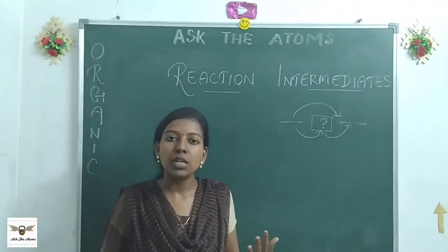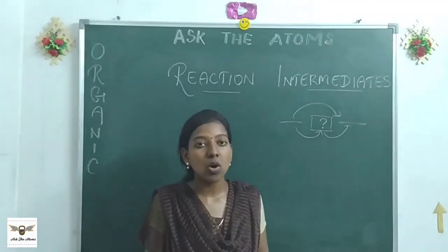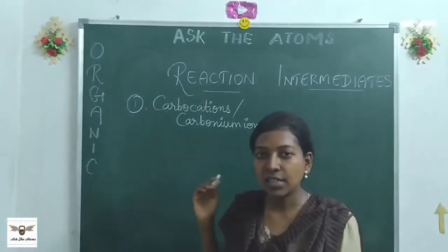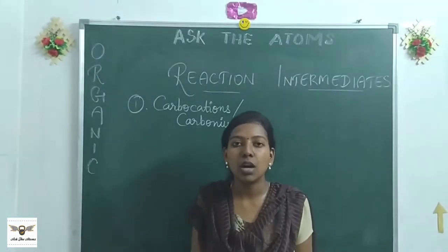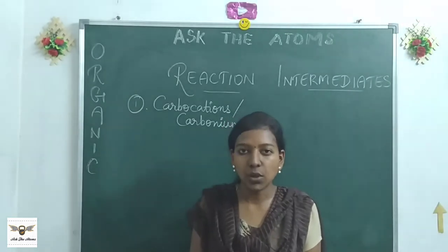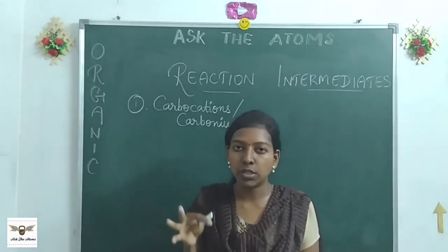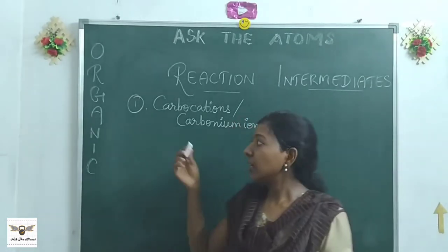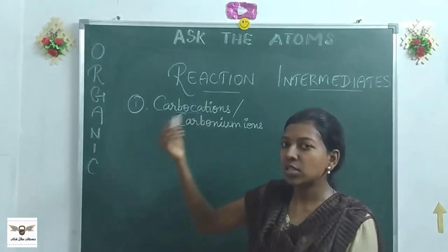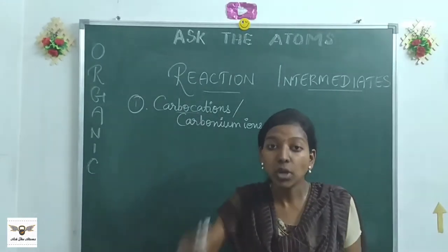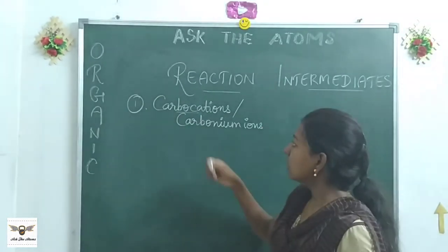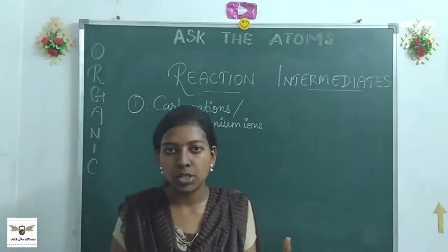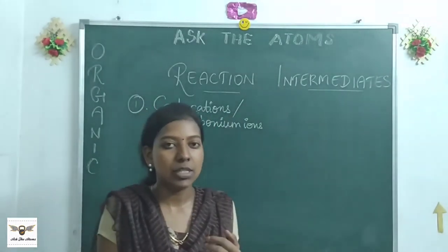There are nearly five types of reaction intermediates. First, we'll study carbocations, otherwise called carbonium ions. A cation is a positively charged species, so a carbocation is a positively charged carbon atom or organic molecule. We need to understand its structure, hybridization, and stability.